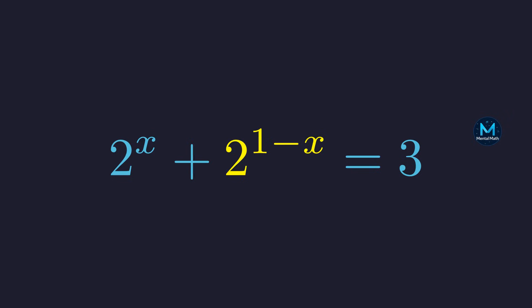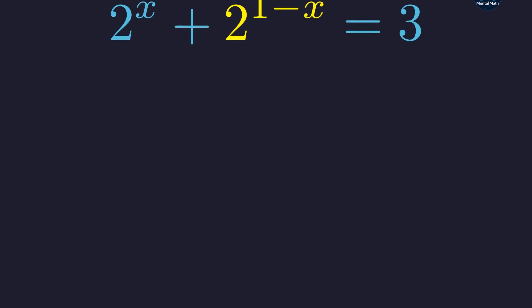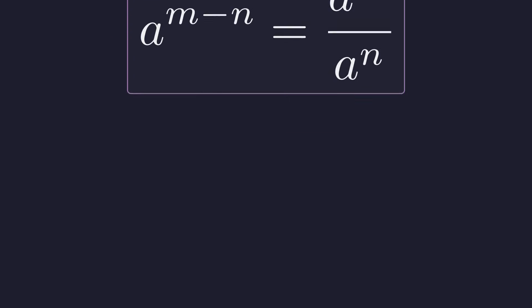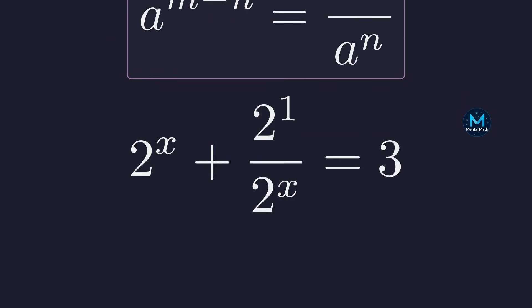We can break this apart using a fundamental exponent rule. The rule states that a base a raised to the power of m minus n is equal to a to the power of m divided by a to the power of n. Applying this rule to our term, we get 2 to the power of x plus 2 to the power of 1 divided by 2 to the power of x equals 3.